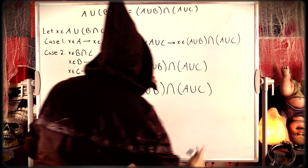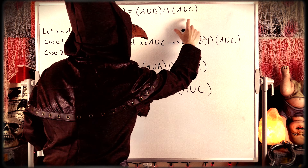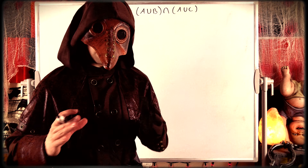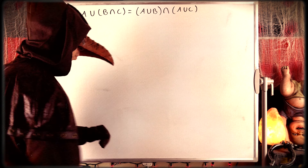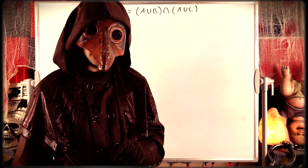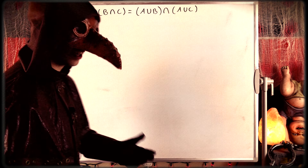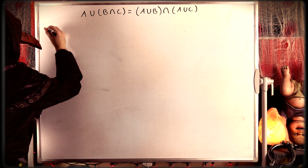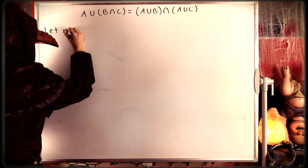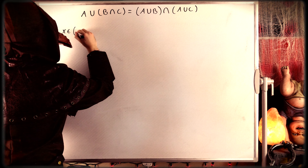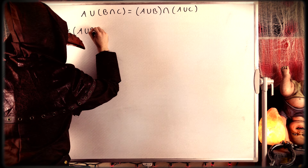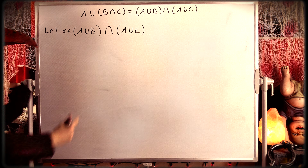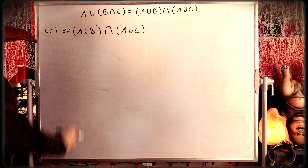To complete our proof, all we need to do now is show that (A union B) intersect (A union C) is also a subset of A union (B intersect C), and that will complete our proof of set equality. Now we take an arbitrary element of the set on the right. Let X be an element of (A union B) intersect (A union C). We just need to show that any such element must also belong to A union (B intersect C).